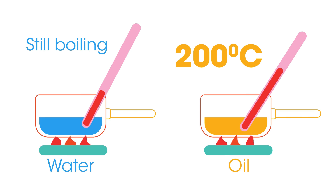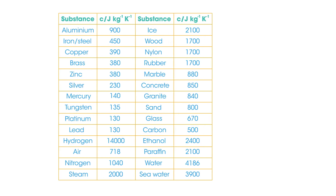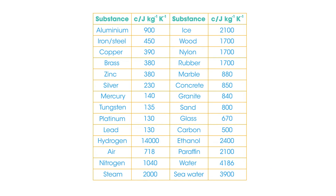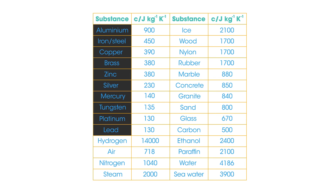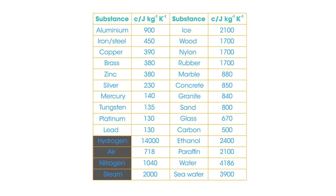You might want to pause the video to take in the data shown here, which shows the specific heat capacities of a range of substances. Notice how the value for metals gets lower as the atomic mass increases, and that materials made up of lighter elements have a much higher figure.